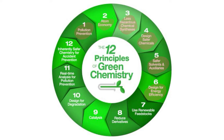Number six is design for energy efficiency. The energy requirements of chemical processes should be recognized for their environmental and economic impacts and should be minimized. Synthetic methods should be conducted at ambient temperature and pressure if possible. Number seven is using renewable feedstocks — a raw material or feedstock should be renewable rather than depleting whenever possible. Number eight is reducing derivatives — any unnecessary derivatization should be minimized or avoided, because those steps require additional reagents and can generate waste.